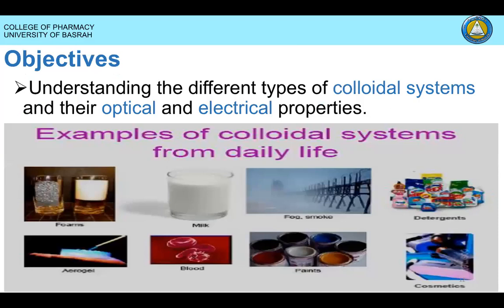Then we're going to move into the first dispersion system — the colloidal system. We will not talk about the coarse dispersion system; that will be covered in the third phase of pharmaceutical technology. But in this phase we're going to study the colloidal system. What is the application of the colloidal system? Examples include honey, blood, and bones — all of which are colloidal systems.